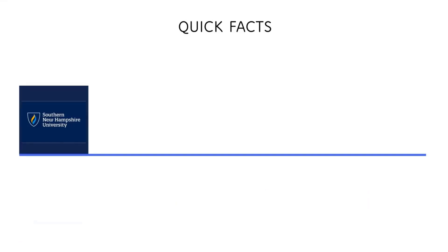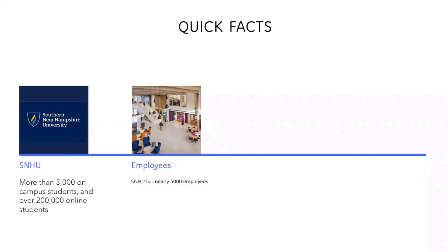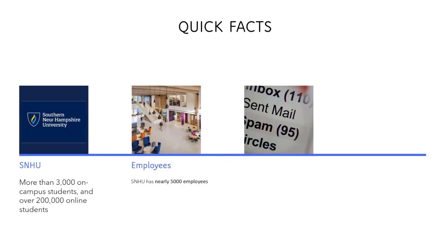Some quick facts. I work for Southern New Hampshire University. We have more than 3,000 students on campus and also 200,000 online students. We have 5,000 employees that support this big number of students. When you have this big community of students, learners, and staff members, you have some challenges. One of those challenges is communication — people don't read their emails. According to a survey, 30% of employees admit that they don't read their email from their employers.